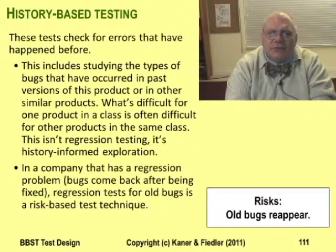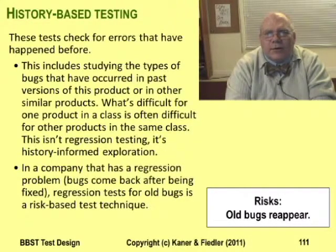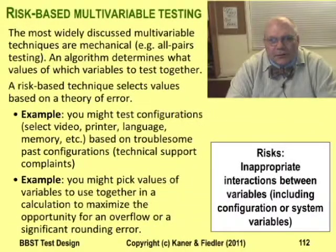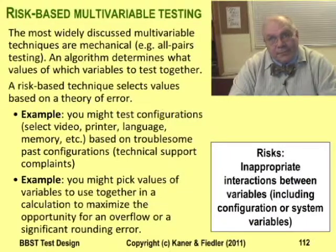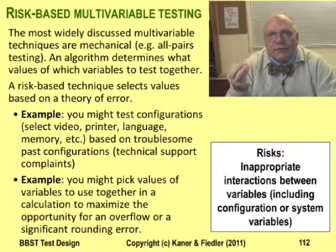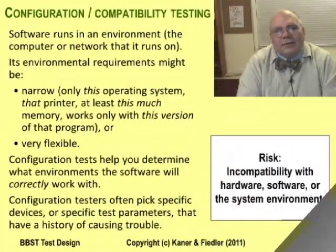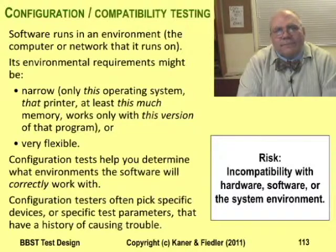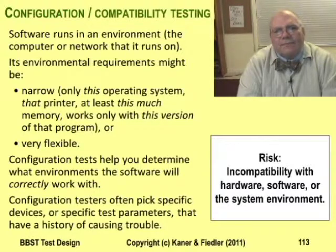History-based tests look for bugs that have happened before, maybe in this program or in some other program. Risk-based combination testing looks for bugs that you can only expose by testing several things together — for example, a program might handle large values for one variable well, but fail when you maximize several variables in the same test. Compatibility testing needs guiding limits because there are too many possible configurations to test; risk-based compatibility testing restricts its tests to configurations that are more likely to give the program trouble.